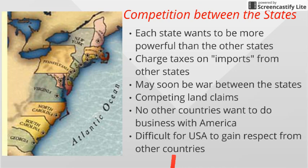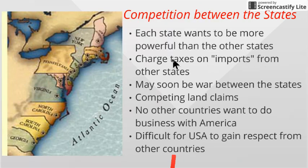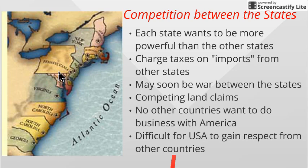Another thing to look at with this weak national government: we have a lot of conflict between the states. On number nine, each state is acting like its own country, so each state's competing to be more powerful. They're charging a tax on imports from other states — so if you shipped something from Pennsylvania into Virginia, you'd pay a tax on that. There are also fights over competing land claims, because Virginia, North Carolina, Pennsylvania, and New York all claim the same land west of the Appalachian Mountains. With Britain gone, states want that land — in Europe, that kind of conflict leads to war, so that could happen. Other countries don't want to do business with the US because they'd need a different deal with each state. Some states are even making their own currency.